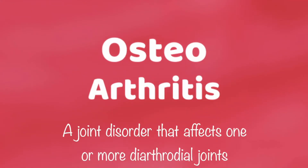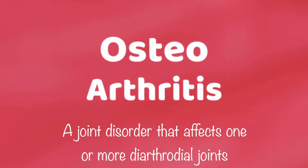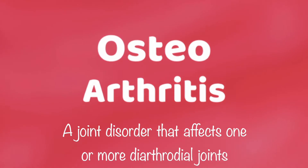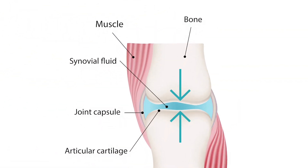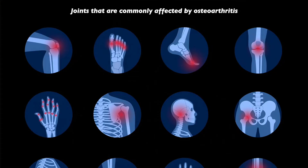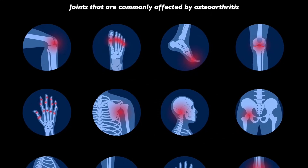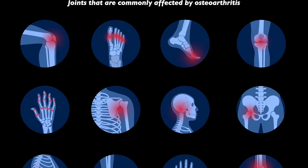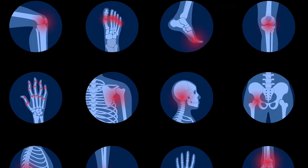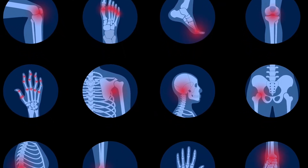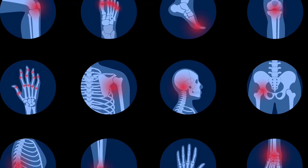Osteoarthritis is a common joint disorder that affects one or several diarthrodial joints — joints where the adjoining bone ends are covered with a thin cartilaginous sheet and joined by a capsule lined by a synovial membrane, which secretes synovial fluid. Some of the most common joints affected by osteoarthritis, or OA, include small joints like the interphalangeal joints in the hand and large ones like the hip and knee.